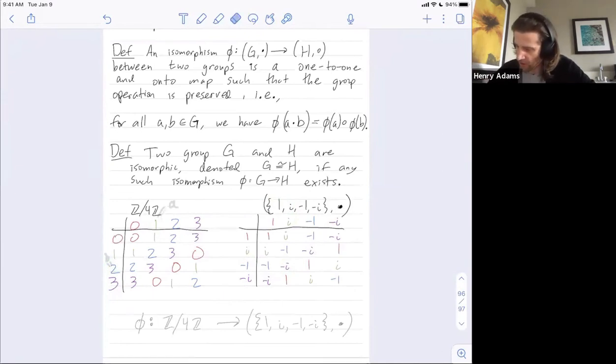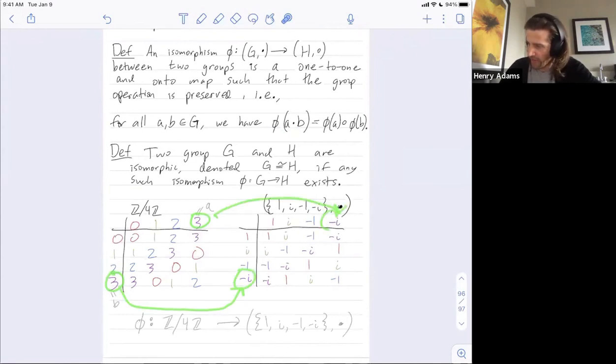Let's do one more example, a and b. So maybe let's take a and b to be the same. Let's take both a and b to be 3. So a is 3 and b is 3. I should be able to combine them in the first group, which here gives me 2, and then map over. 2 maps over to negative 1, so that's the left-hand side, it's negative 1. What's the right-hand side? The right-hand side says you could instead map over to get negative i and negative i, and then combine negative i with itself in the second group, multiplication, which gives me negative 1. Because I get negative i times negative i is just i squared, which is negative 1. Either way, I get negative 1.